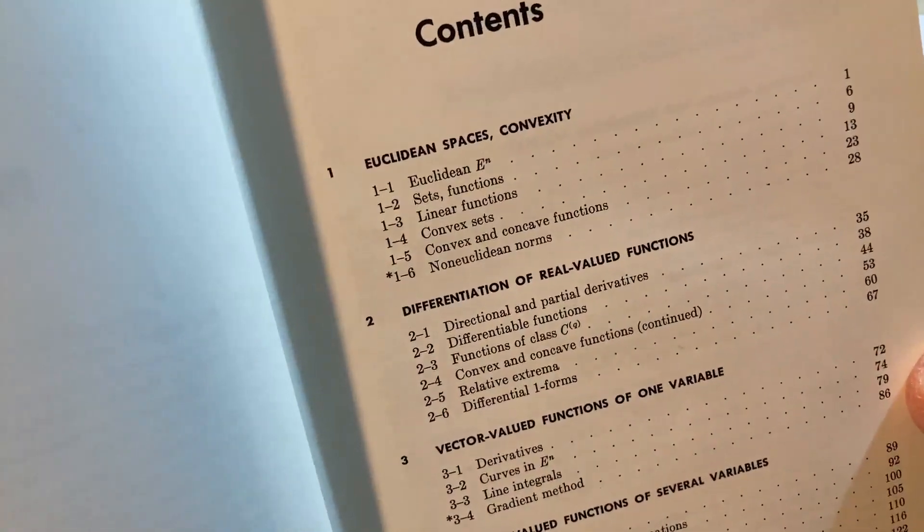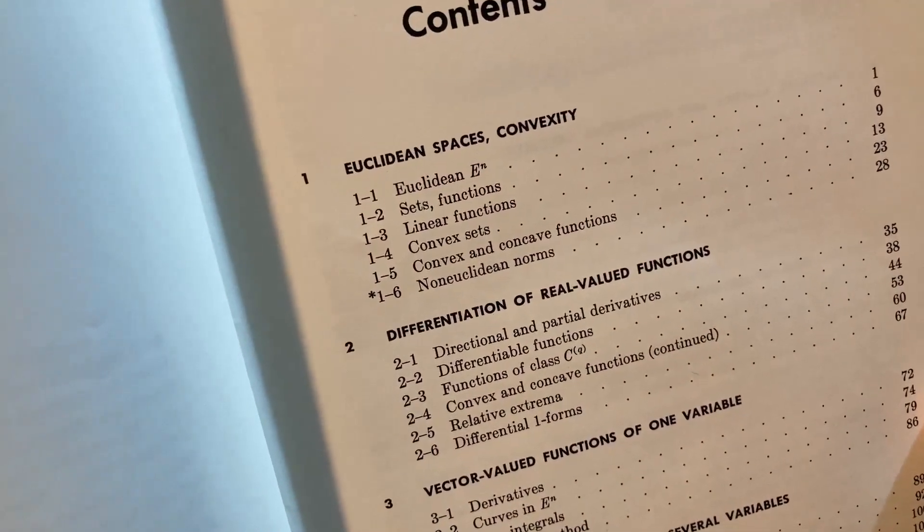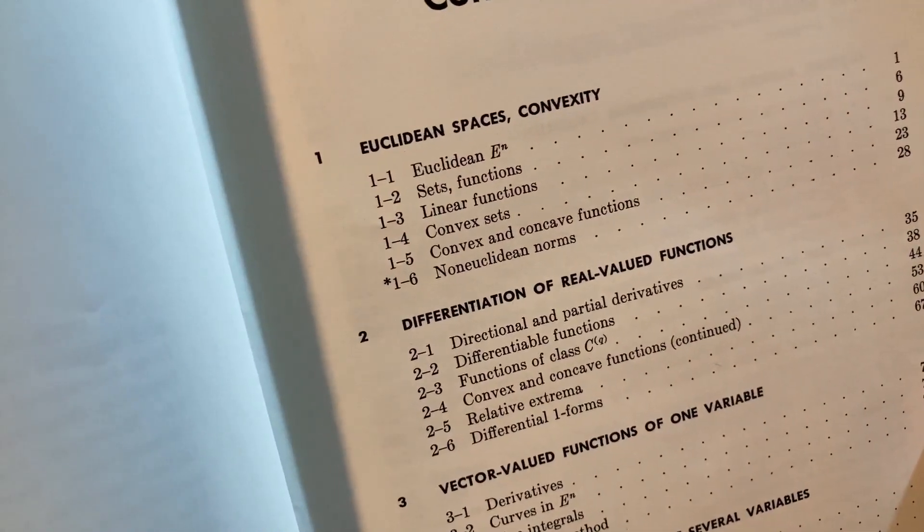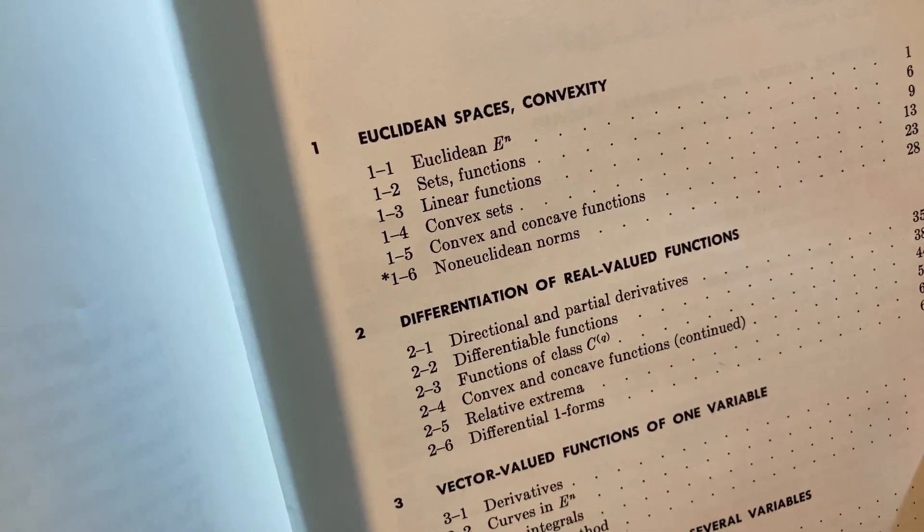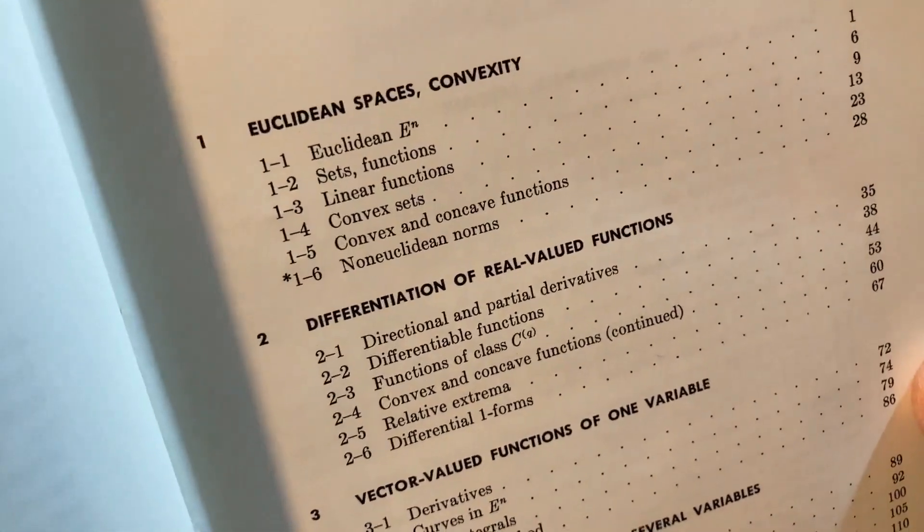Let's take a close look at the contents very carefully. It starts with Euclidean spaces and convexity: Euclidean e to the n, sets and functions, linear functions, convex sets, convex and concave functions, and non-Euclidean norms.